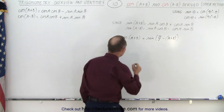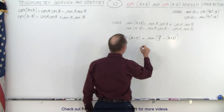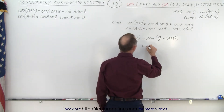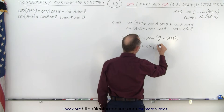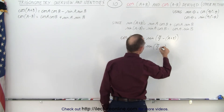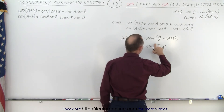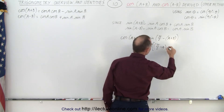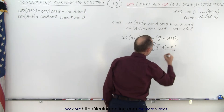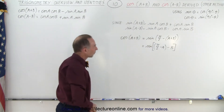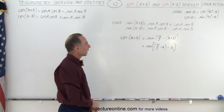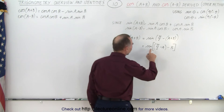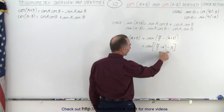Now we're going to regroup that a little bit. We write this as the sine of (pi over 2 minus a) minus b. This is the sine of the difference of two angles, so we know that we have a relationship for that.